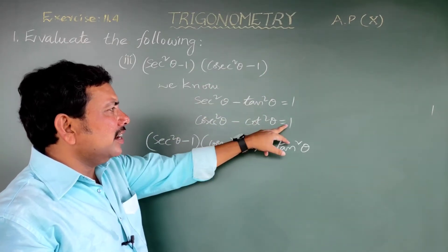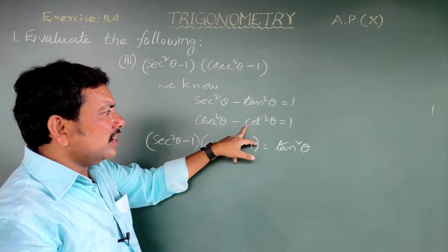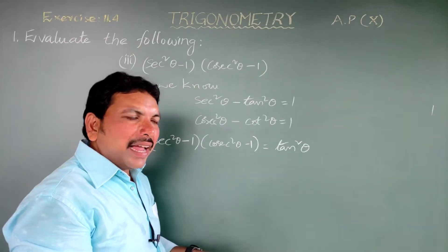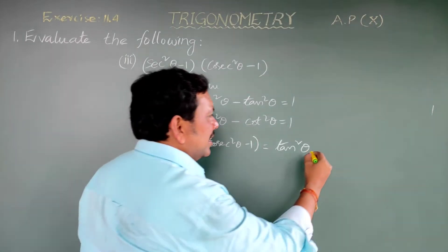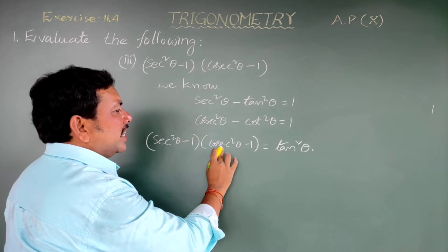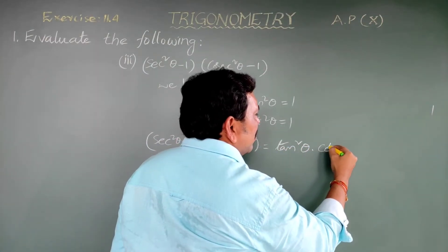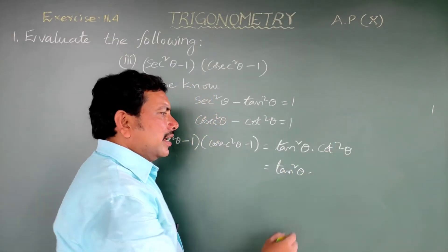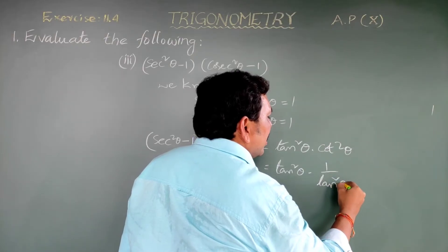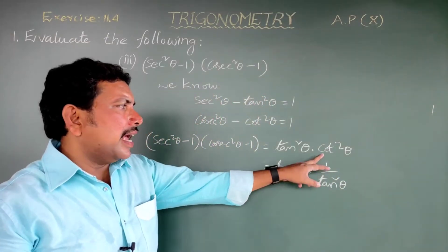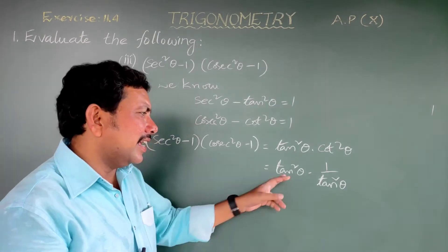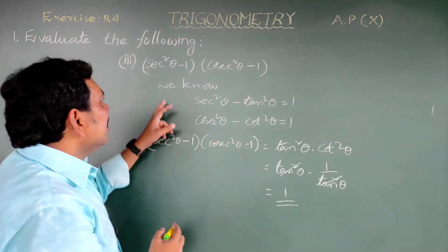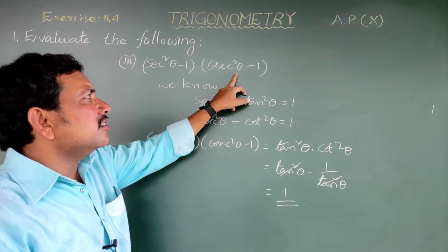In the place of cosec²theta minus 1, we can write cot²theta. So that equals tan²theta into cot²theta, which is tan²theta into 1/tan²theta, because cot is the reciprocal of tan. Here tan²theta and tan²theta cancel, so the answer is 1. Therefore, (sec²theta - 1)(cosec²theta - 1) equals 1.